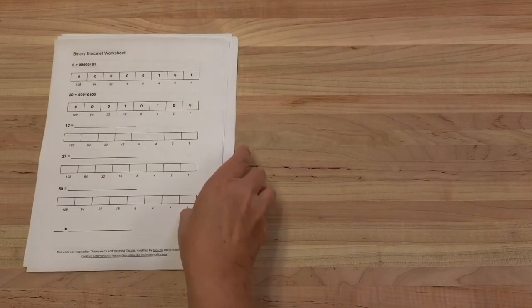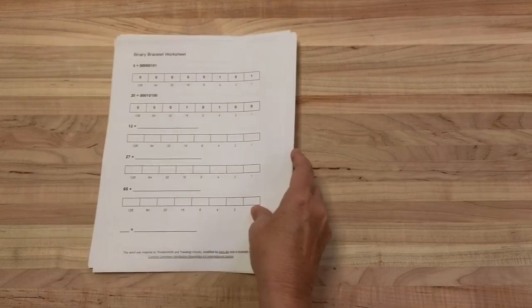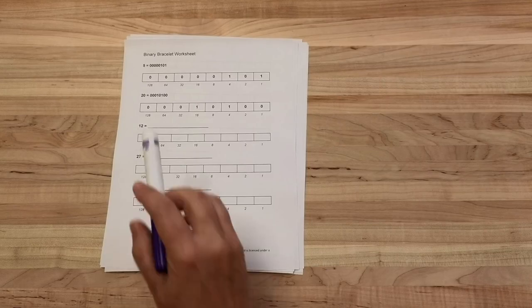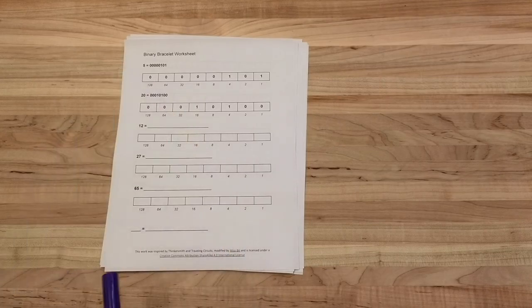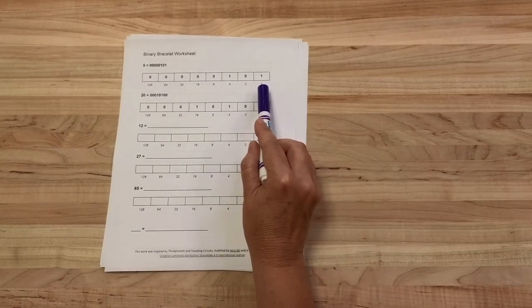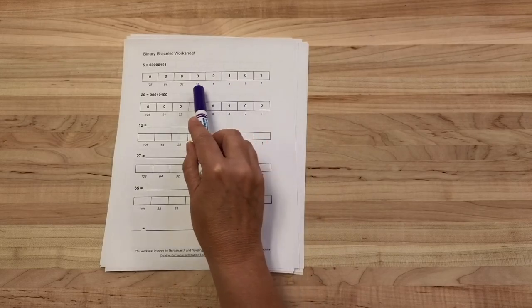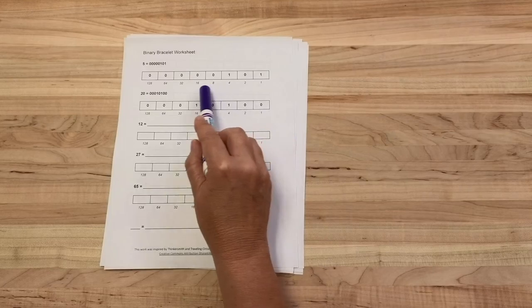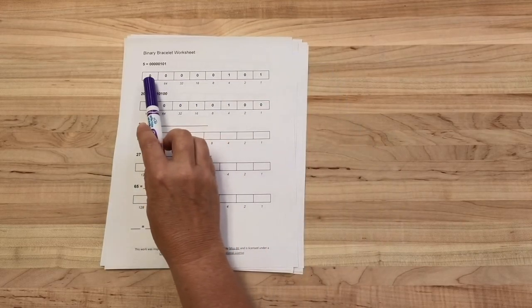So let's start with numbers. We of course recognize base 10 numbers, so how do we get base 10 numbers converted into binary? Here is the trick - you'll notice here there are some numbers underneath these cells: 1, 2, 4, 8, 16, 32, 64, 128. You'll notice they're doubling each time.